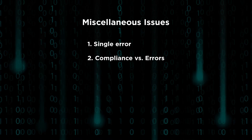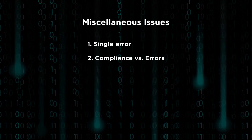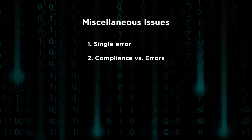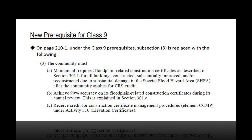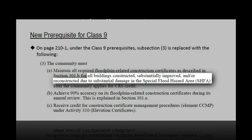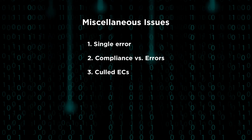We also forward these ECs to your State NFIP Office and FEMA Regional Office for any follow-up they deem necessary. When you submit your ECs to ISO for review, if they do not fit the CRS requirement of all buildings constructed, substantially improved, and/or reconstructed due to substantial damage in the SFHA, they are culled. So when the building is in the X Zone, or if we can tell it's not an insurable building — like a cell tower, small accessory shed, etc. — or for nonsubstantial improvements of less than 50%, we will remove those from consideration in our review. They are not counted as wrong, just removed from consideration.